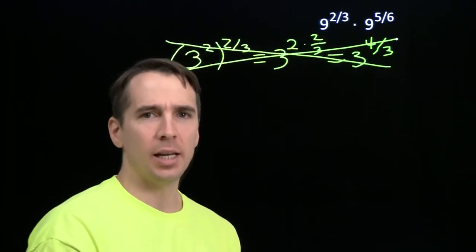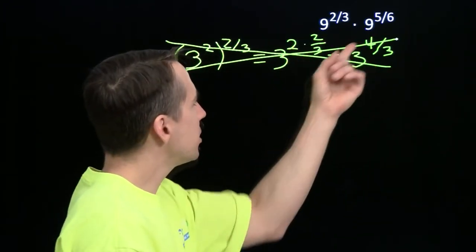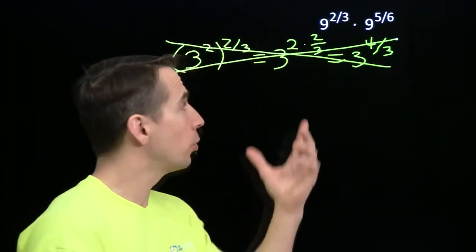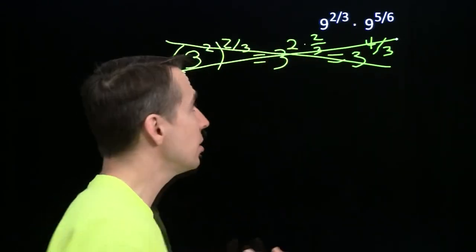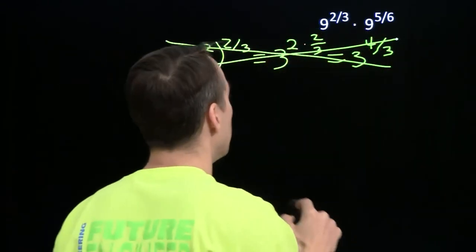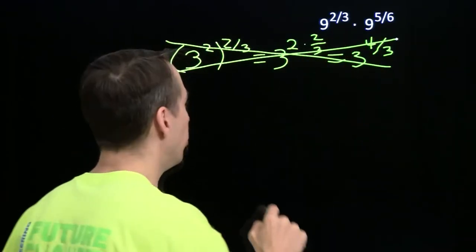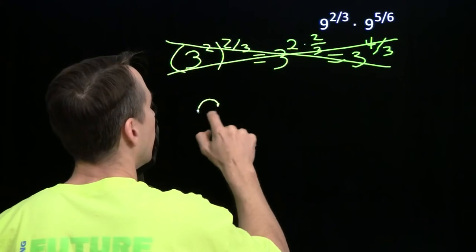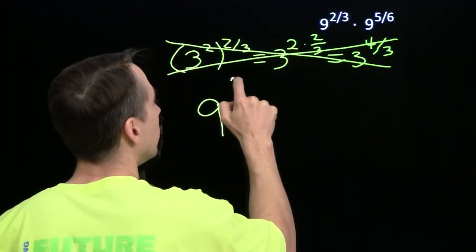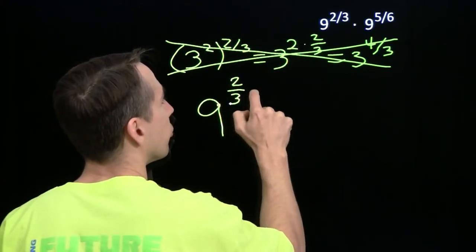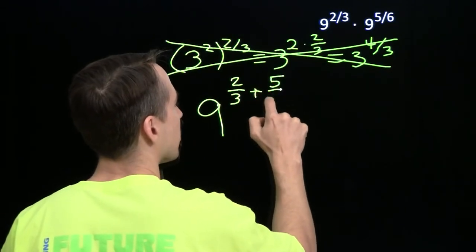The bases are the same. The bases are the same here. So we have an exponent rule for when the bases are the same. When the bases are the same, we're multiplying these two numbers, we add the exponents. That works for fractional exponents as well. And that gives us 9 to the 2 thirds plus 5 sixths.